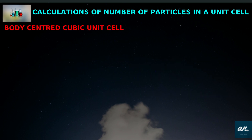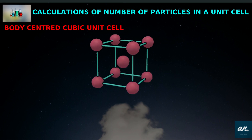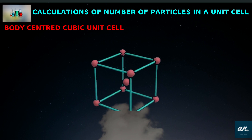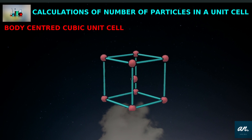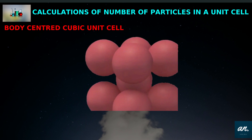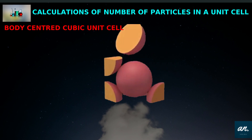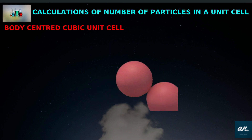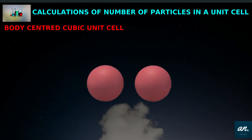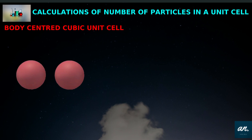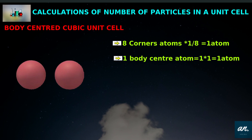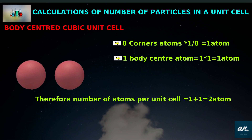This is the body-centered cubic unit cell. Atoms are in the corners and in the body center. The contribution of a corner atom is 1/8. The body center atom is completely inside the unit cell — it cannot be shared. So: 8 corner atoms × 1/8 = 1 atom, plus 1 body center atom × 1 = 1 atom. Therefore, the number of atoms per unit cell equals 2 atoms.